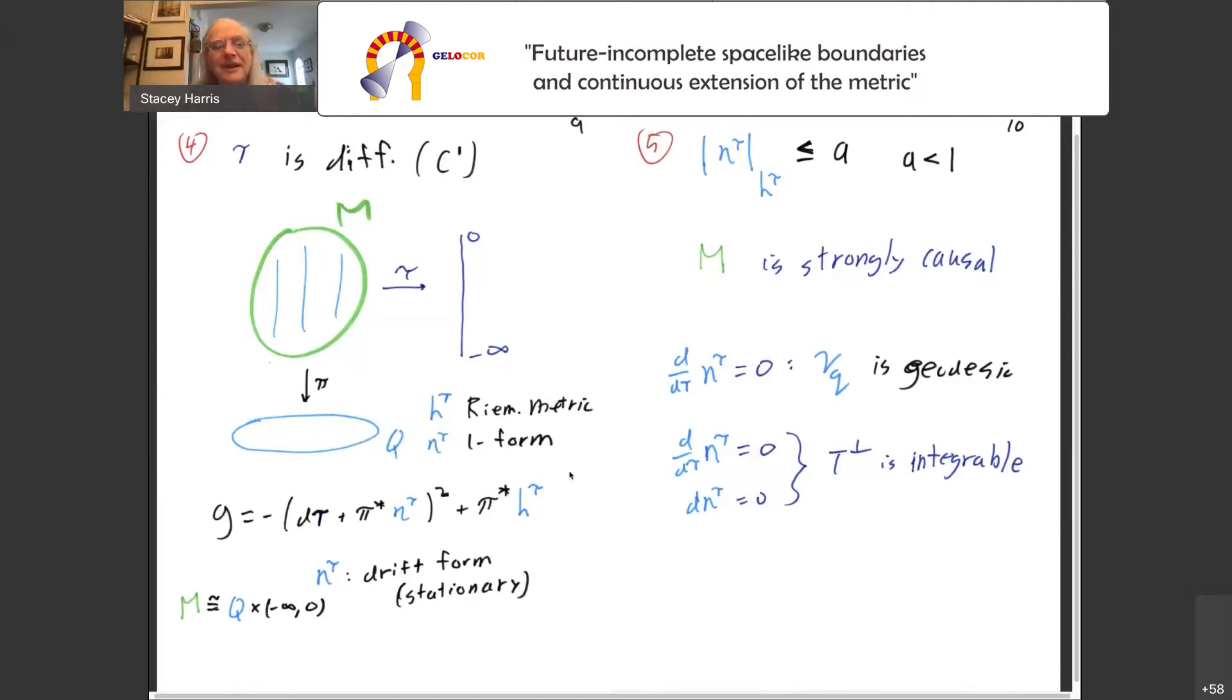What this comes to is that these are time-dependent elements. So h tau is a time-dependent Riemannian metric on the base space Q, and eta tau is a time-dependent one form. I call it the drift form. In particular, we get a decomposition of M globally as Q cross minus infinity to zero. The minus infinity there is a bit of an overstatement, but it doesn't change the diffeomorphism class if I allow that minus infinity to be finite at some point.